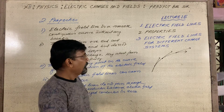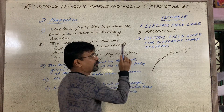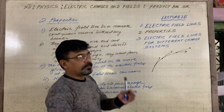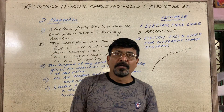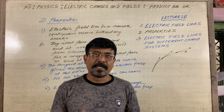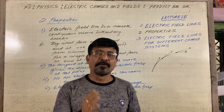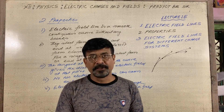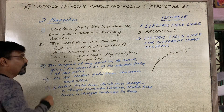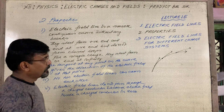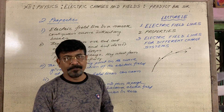But at a particular point or position, the direction of the electric field is always unique — it is always in a particular direction. Now the fourth point: electric field lines never cross each other.